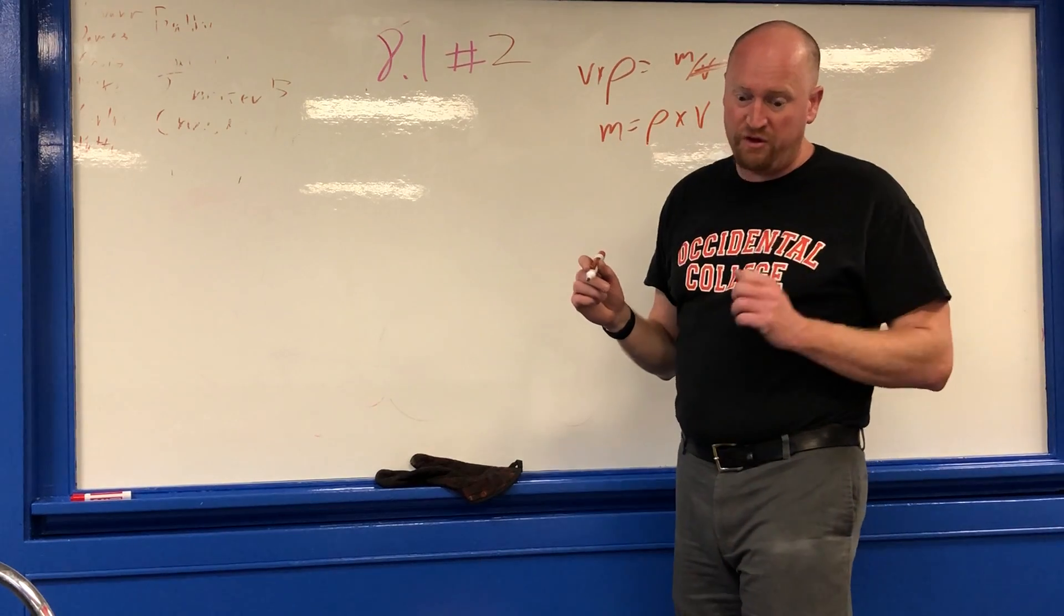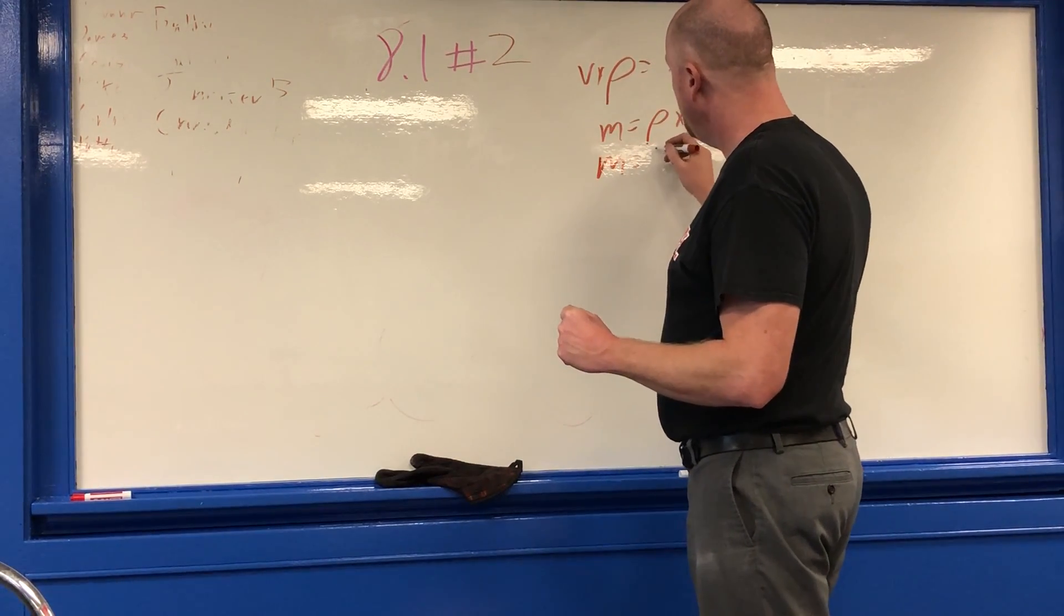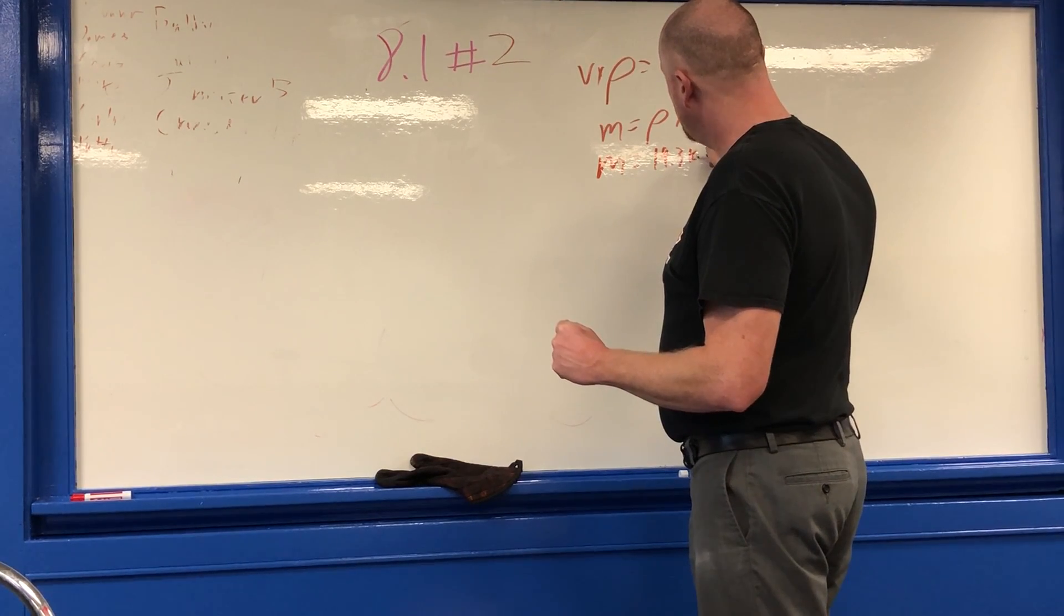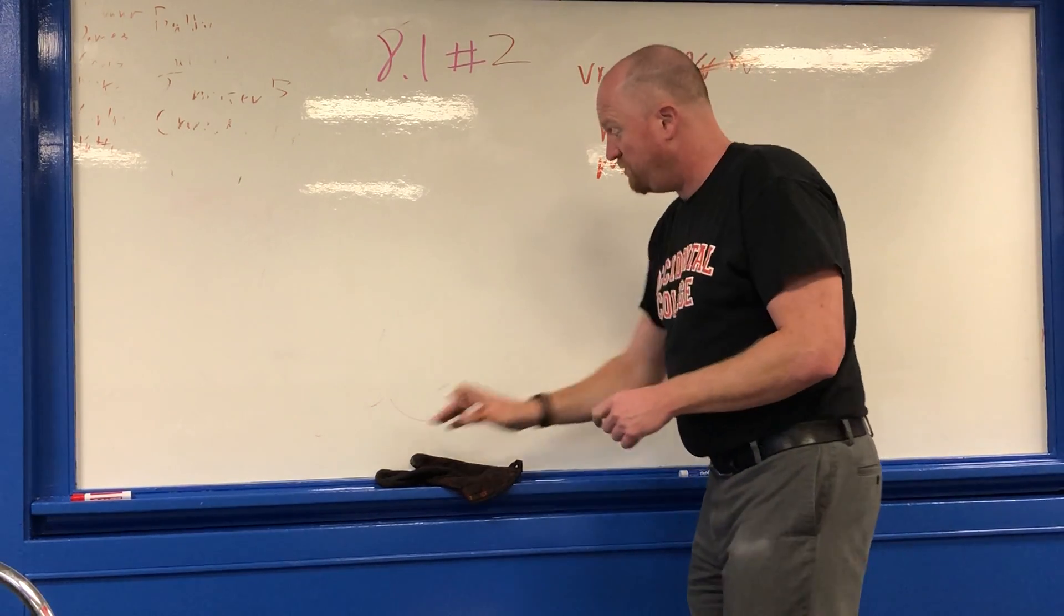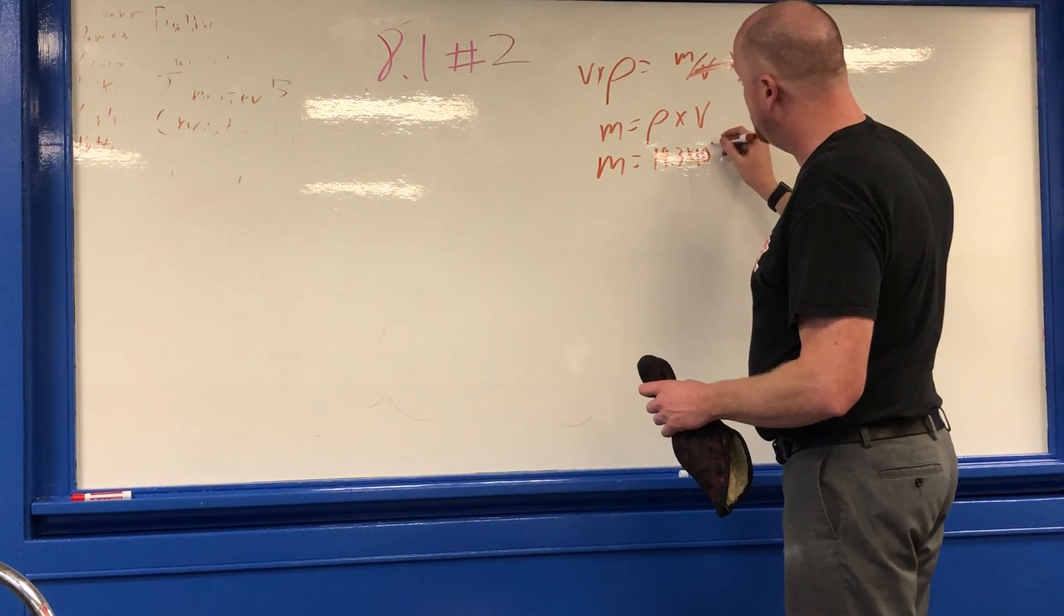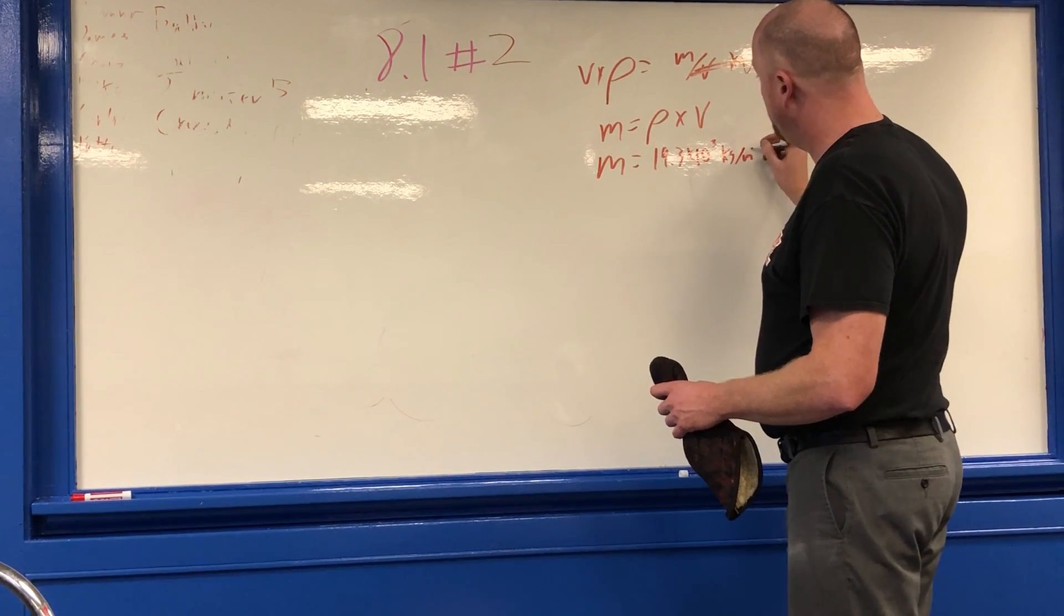Now, the density of gold comes in—if you look in your textbook—at 19.3 times 10 to the third kilograms per meter cubed.